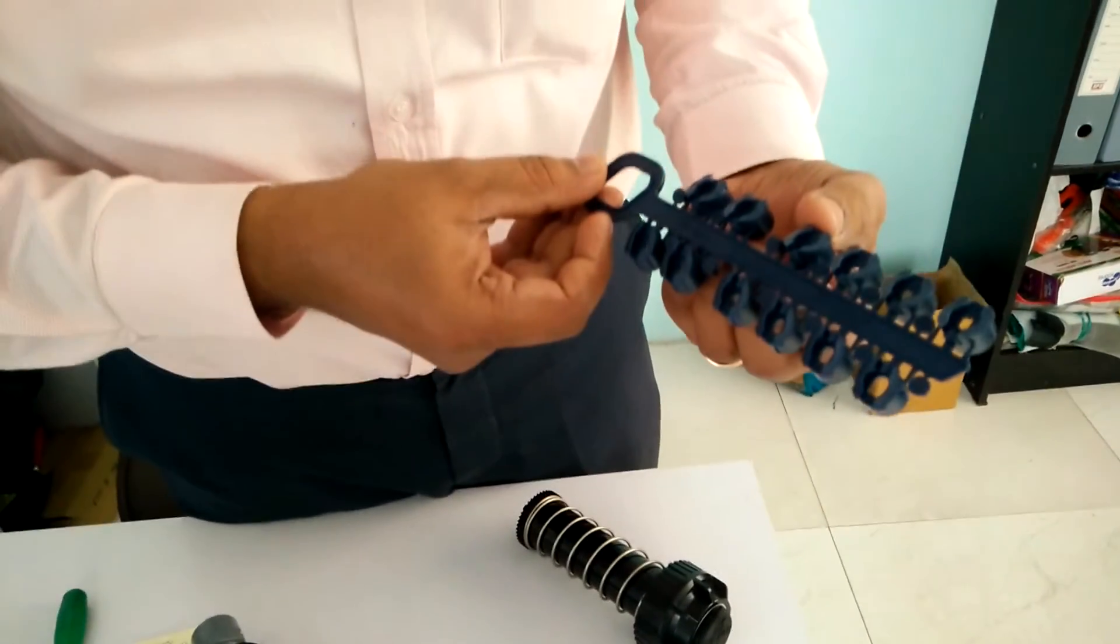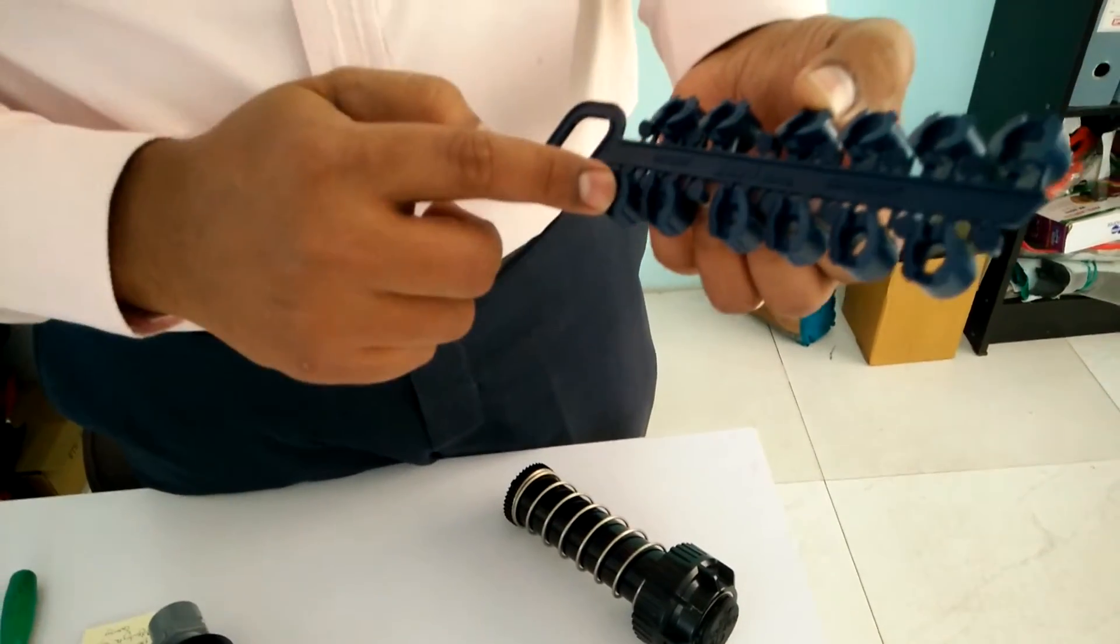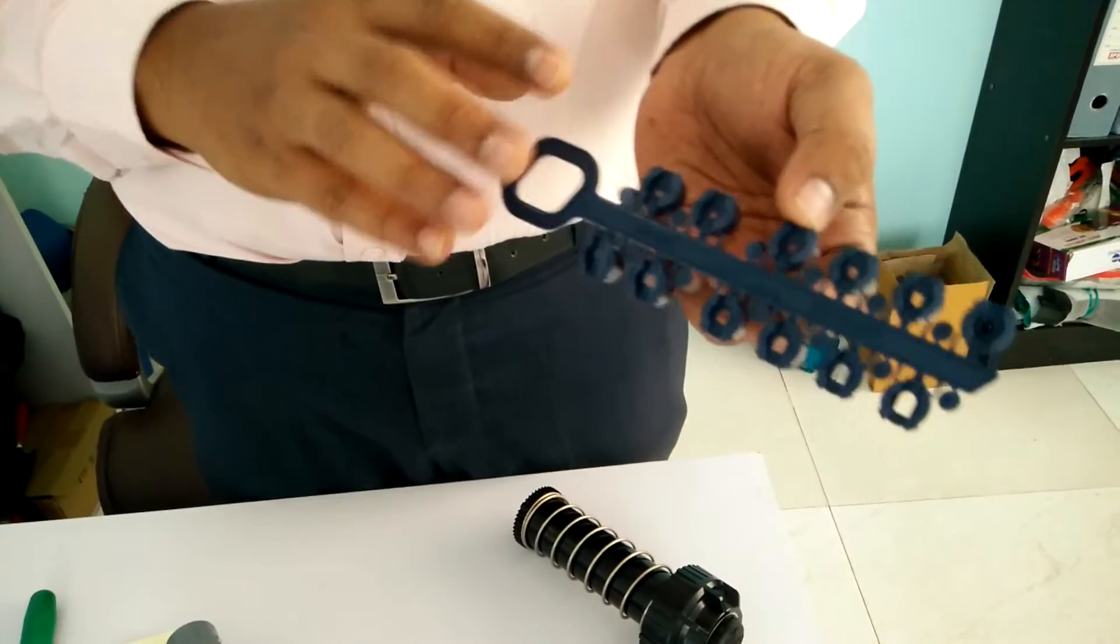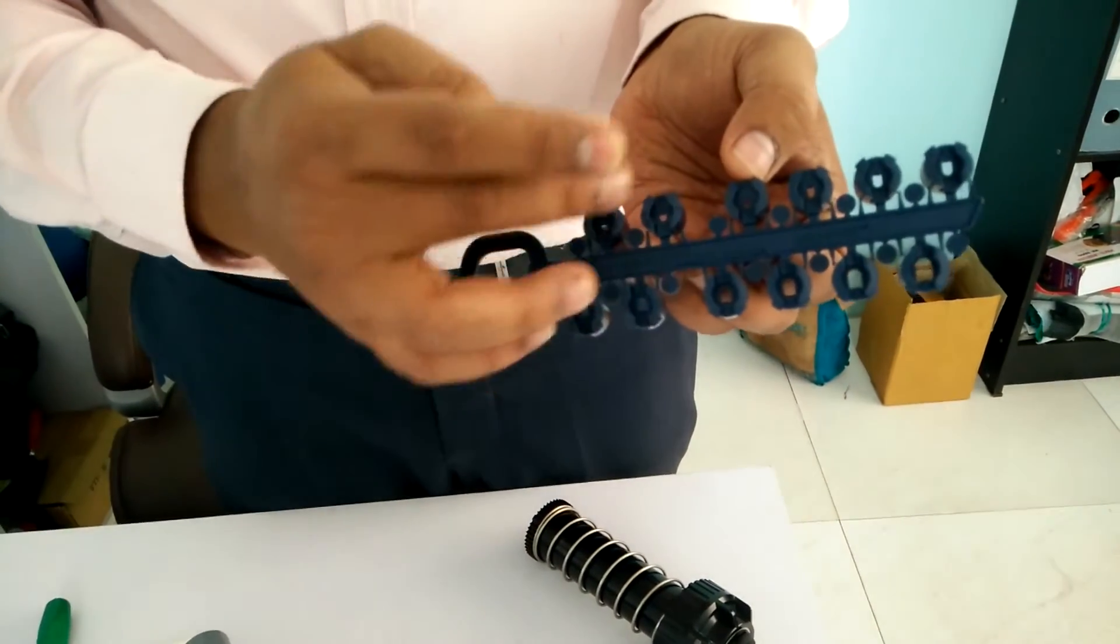You can see here 1.0, 1.5, 1.5 here. These four are for the low angle. For windy areas, we have to use these low angle nozzles: 1, 2, 3, 4.